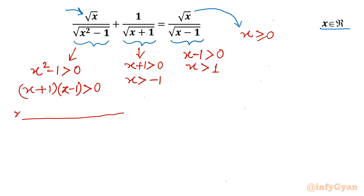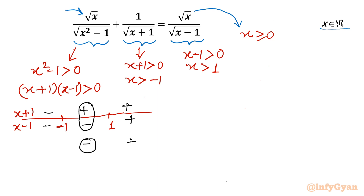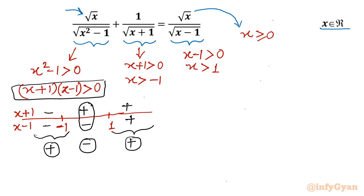Using the number line method to find where the product (x+1)(x-1) is positive: the zeros are at x = -1 and x = 1. Analyzing the sign of each factor, the product is positive when x is less than -1, and when x is greater than 1.